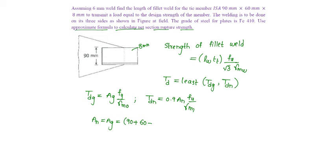So minus 8 into thickness 8 will be equal to 1136 mm square.